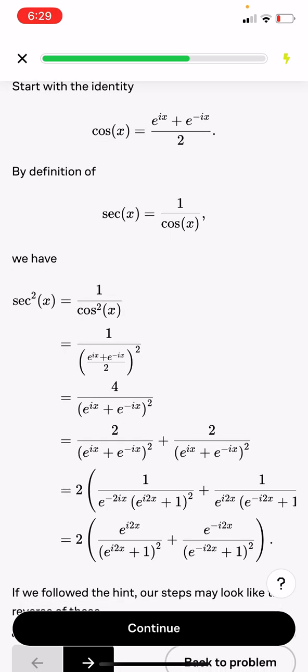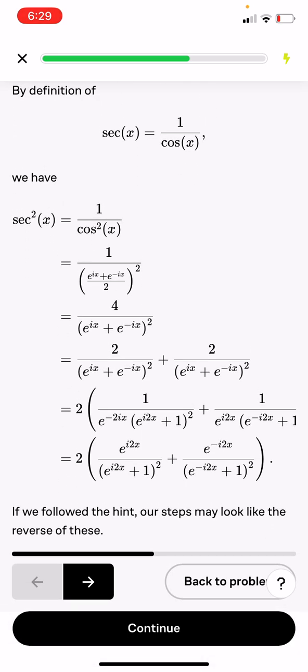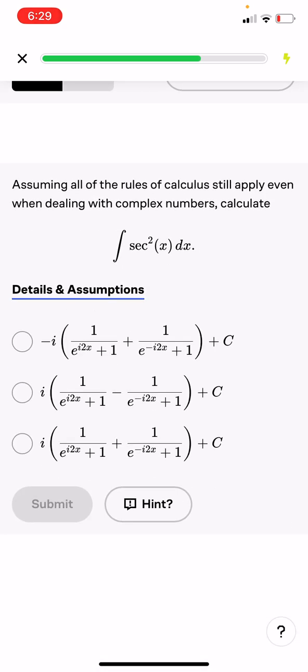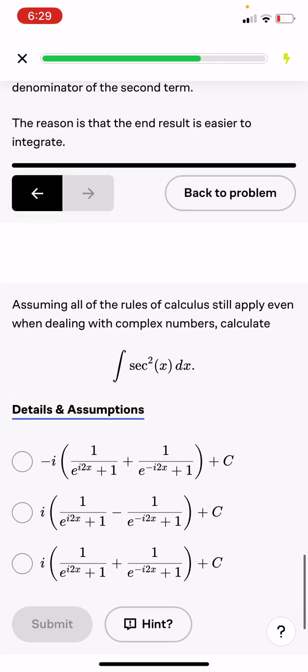Okay, that actually makes sense. Okay I just don't want to understand. If we follow the hint, our expression may look like the reverse of these. Then we're going to go ahead and factorize e^(-2ix) out of the denominator of the first term and similarly factor e^(ix) out of the denominator of the second term. The reason that this is done is the end result is easier to integrate. Assuming all of these rules of calculus still apply when dealing with complex numbers.